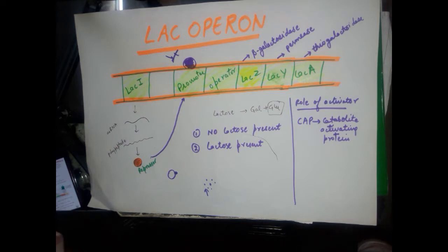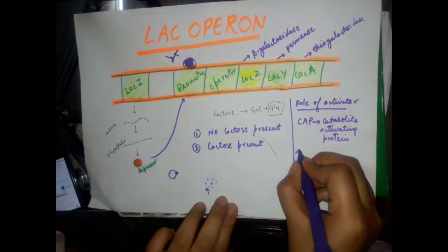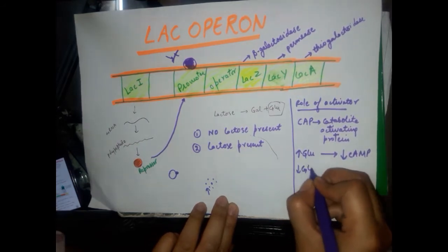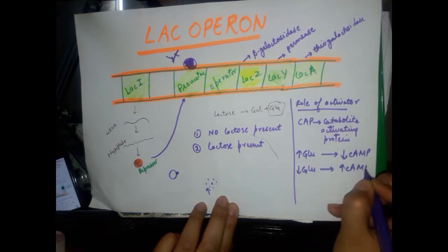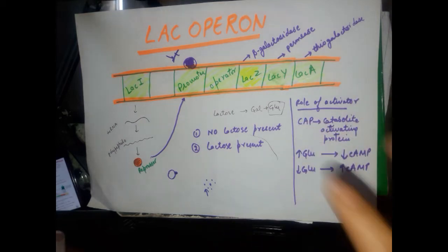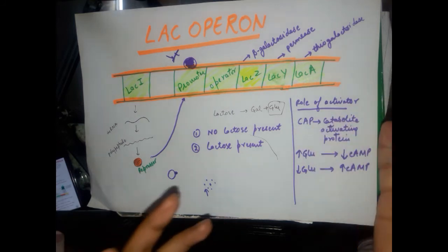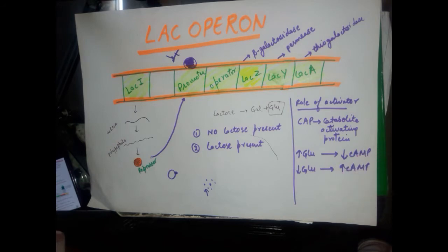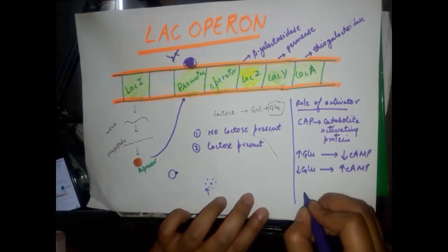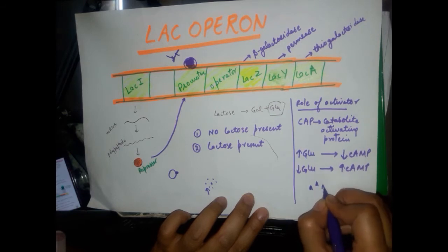Before discussing CAP, we need to understand a molecule called cAMP — cyclic AMP. Glucose levels in the cell regulate cAMP levels. When there is high glucose in the cell, there will be low cAMP. When there is low glucose in the cell, there will be high cAMP. When cAMP binds to CAP, it activates it. This CAP-cAMP complex then binds to the promoter and enhances the transcription of the lac operon genes.